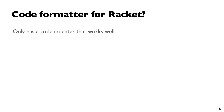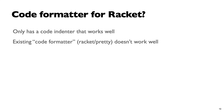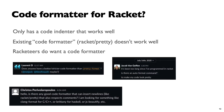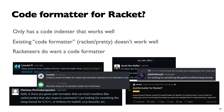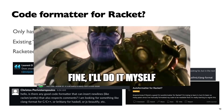So, code formatter for Racket — what's the current status? There's essentially only a code indenter and it works well. There's also racket/pretty, but it doesn't work quite well — for example, it doesn't handle parentheses alignment properly. Racket cheers for a code formatter — people on Slack, Reddit, and Discord keep asking where the code formatter is. I'm among those people, and eventually I said, fine, I'll do it myself.